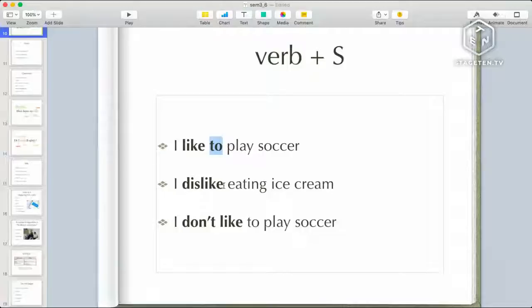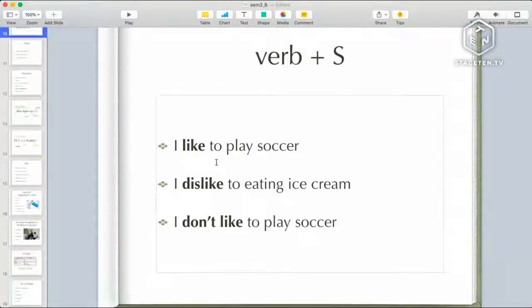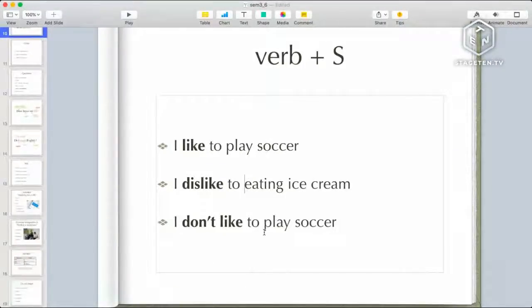En inglés, mi segundo verbo cuando tenemos dos verbos no se vuelve acción, se vuelve sustantivo, que sería como un objeto. I like to play soccer. Like es el verbo principal. Tenemos dos opciones en inglés: el uso de to, I like to play soccer, I like to eat ice cream, o el uso de ing. Si no tengo el to, fácilmente yo puedo agregarle un ing: I like playing soccer. Lo que no podemos hacer es combinar los dos. Si yo digo I dislike to eating ice cream es como si fuera repetitiva.